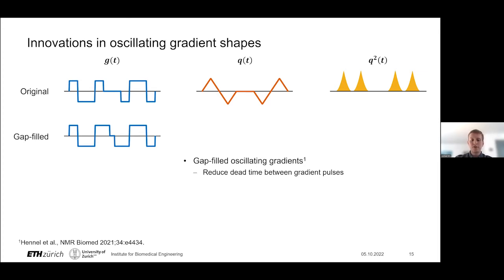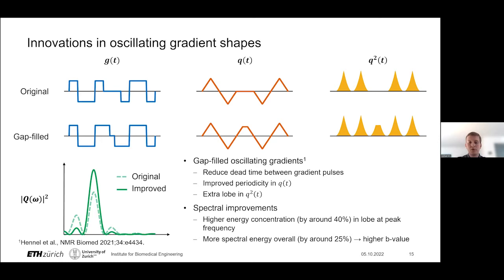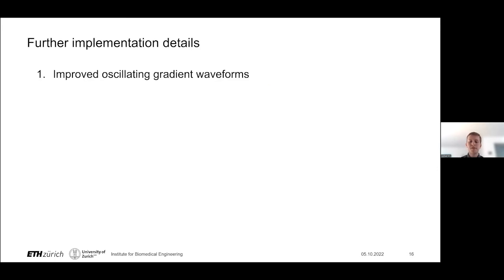To see what this does: in q(t), we have improved periodicity because there's a shorter disruption in the middle. For the gap-filled case, q(t) looks much more regular, like a constant triangular waveform. The implication for q² is that because we no longer remain at q=0 between the two oscillations, we have an extra lobe in q², corresponding to a higher b-value. Both properties are also seen in the spectral domain: due to improved periodicity in q(t), we have about 40% higher energy concentration at the peak frequency; and with the higher b-value, we have about 25% more spectral energy overall.